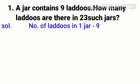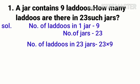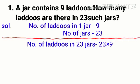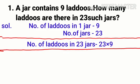So our first statement is: number of laddus in one jar = 9. Second statement: number of jars = 23. So what do you have to find? Number of laddus in 23 jars.